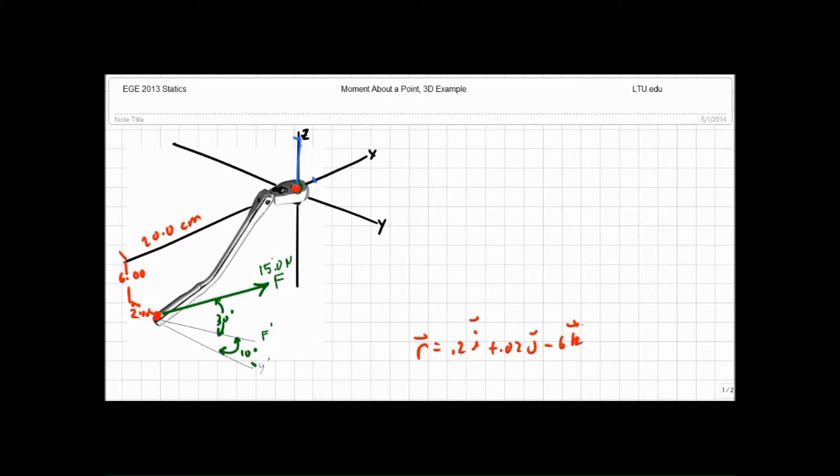and I can take the sine of 30 or the cosine of 60 to get the same answer. So f sub z equals 15, the magnitude of our force, times the sine of 30 equals 7.50.